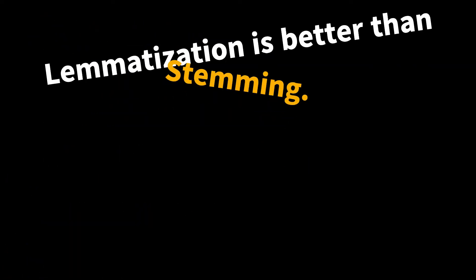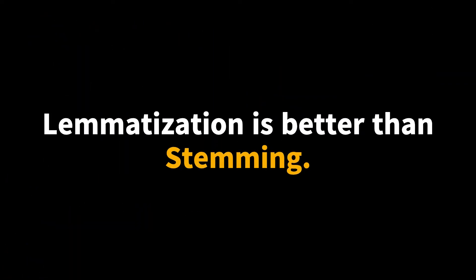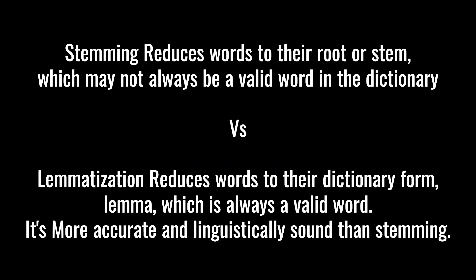Lemmatization is slightly different from stemming, or we can say it's better than stemming. The key difference is that stemming reduces words to their root or stem, which may not always be a valid word in the dictionary. For example, running will be reduced to runn. On the other hand, lemmatization reduces words to their dictionary form, or lemma, which is always a valid word. It's more accurate and linguistically sound than stemming.